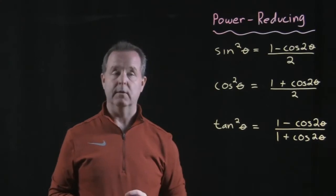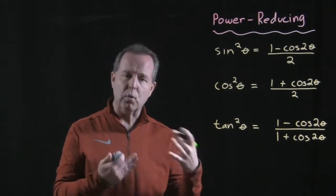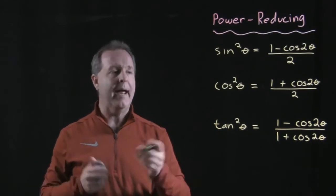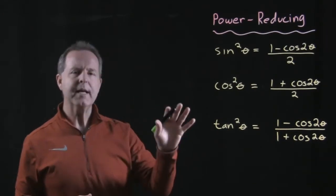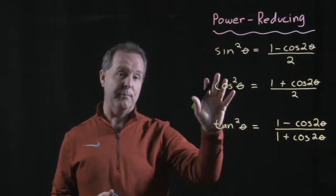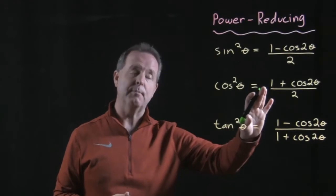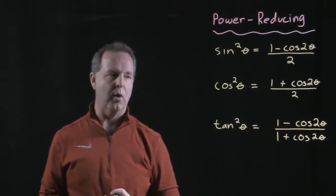Another set of identities that we're going to be able to explore are called power-reducing identities. And again, these are derived from previous identities and matching them and so forth. But what's unique about these is they take a trigonometric function that has a power greater than one and we're able to reduce it, reduce the power to a power that's only one.